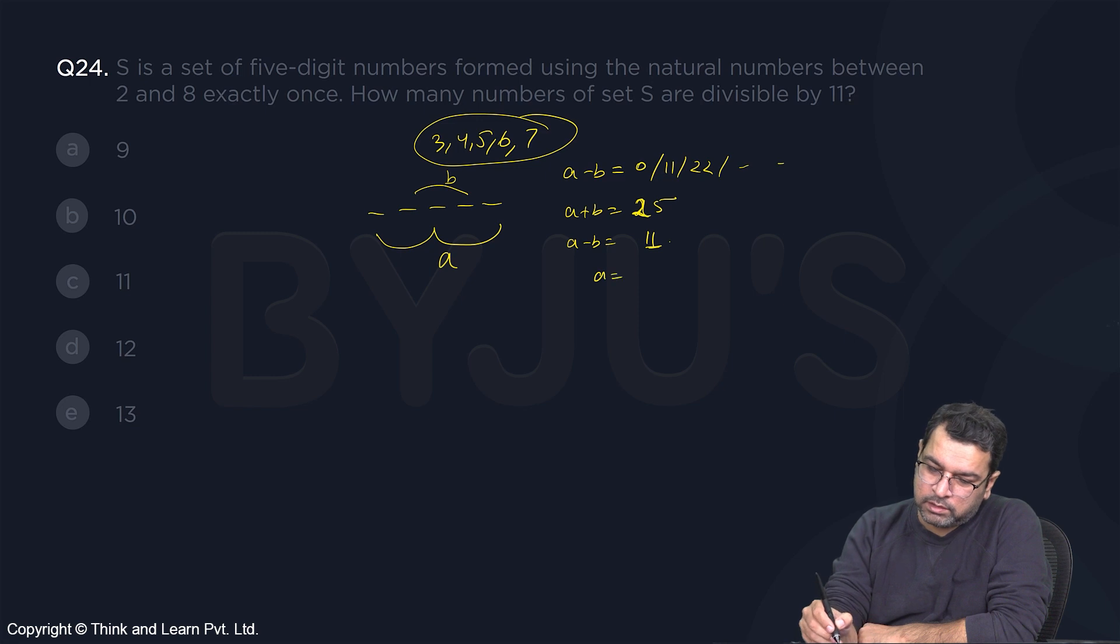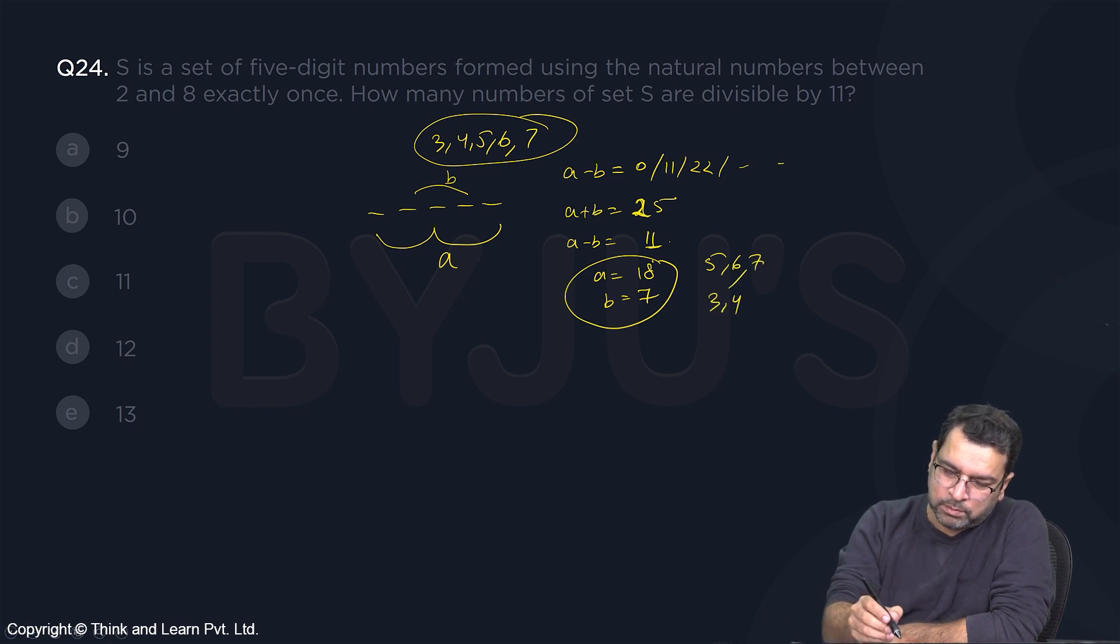From this you get A equals 18 and B equals 7. So I need three numbers whose sum is 18. The only possibility is 5, 6, 7. And for B, it's 3, 4. So at these three positions, 5, 6, 7 will appear in any order, and here 3, 4 will appear in any order.